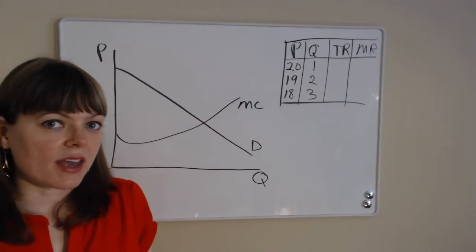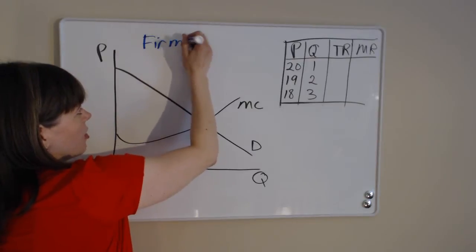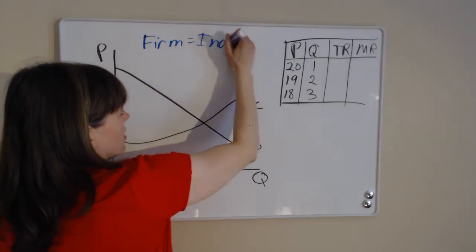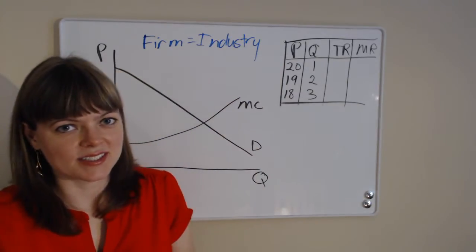We also keep in mind that because this is a monopoly, this same diagram is the firm diagram, and also the industry diagram. That's just really the definition of a monopolist.